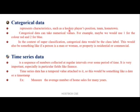Next is categorical data. It always represents characteristics such as a hockey player's position, team, or hometown. It can also take numerical values — for example, using one to represent the color red and two for blue. This is just a representation.